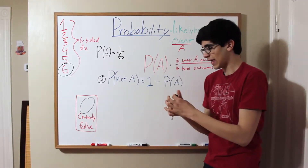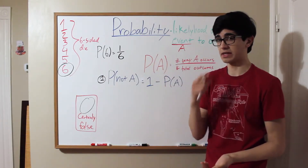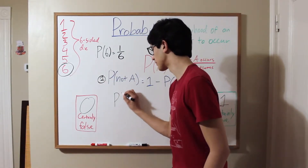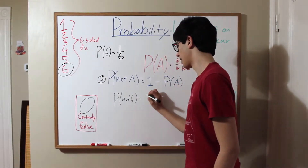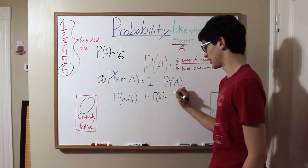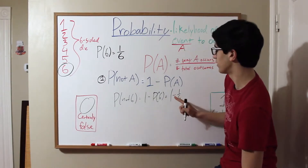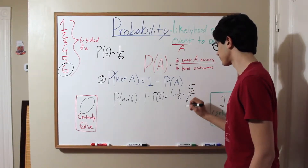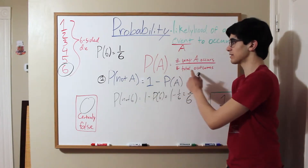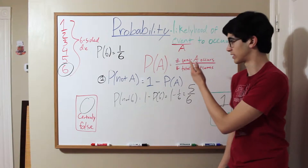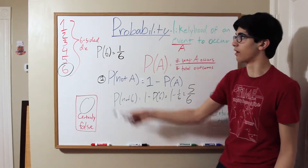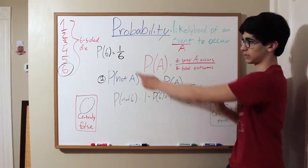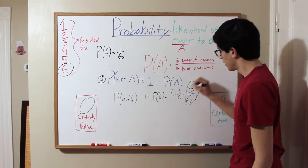Let's try an example with 1/6. If the probability of rolling a 6 on a 6-sided die is 1 out of 6 — because it can only happen one time out of the 6 sides — then the probability of not 6 is 1 minus 1/6, which is 6/6 minus 1/6, equaling 5/6. This makes sense: the number of ways you can not roll a 6 are 5 — rolling a 1, 2, 3, 4, or 5 — divided by 6 total outcomes.